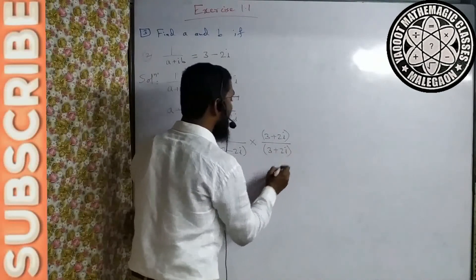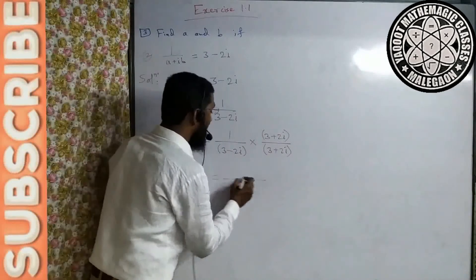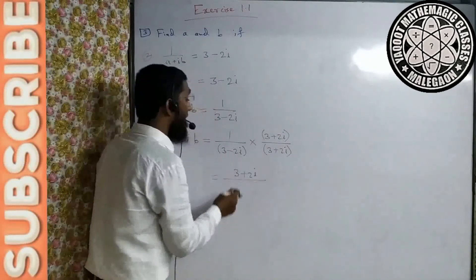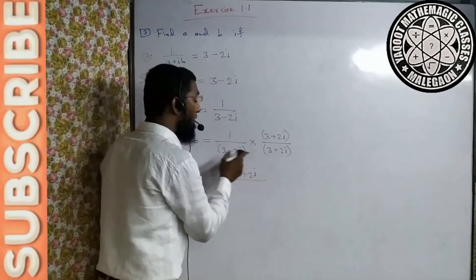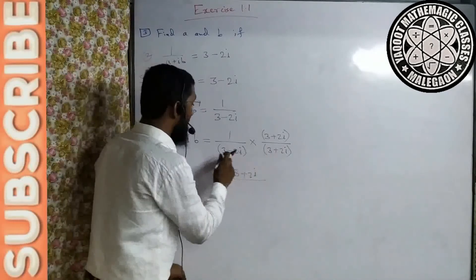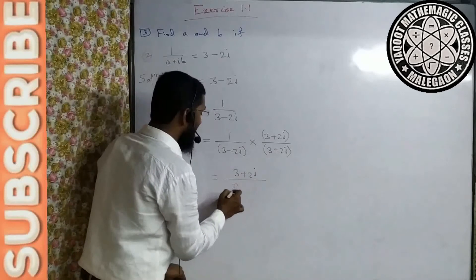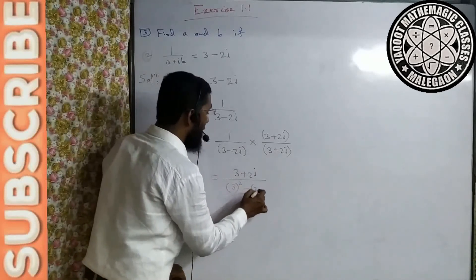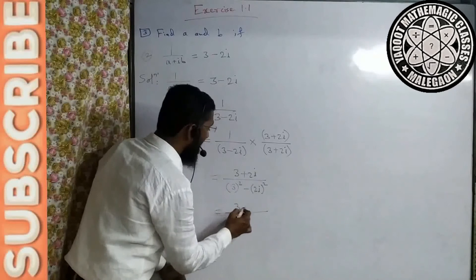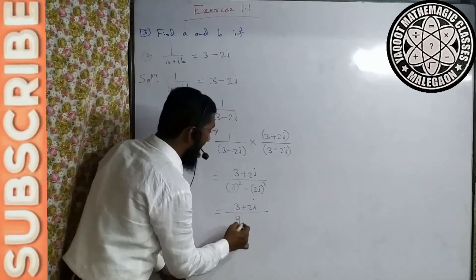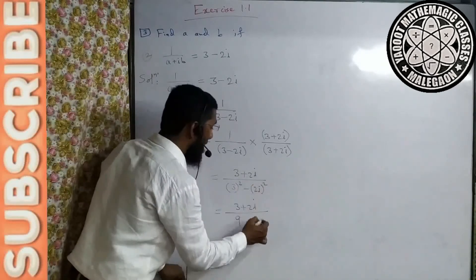3 minus 2i ka conjugate rahega 3 plus 2i. Usi se multiply, usi se is fraction ko divide bhi karenge. 1 into 3 plus 2i — yeh dono complex numbers ek doosre ke conjugate hain. Inका multiply a minus b into a plus b formulae se kar sakte hain: a square minus b square. That means 3 plus 2i divided by 9 plus (2)² into i² — i square bhi hoga.